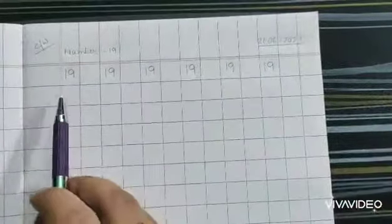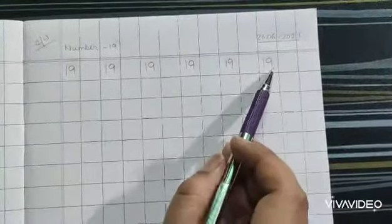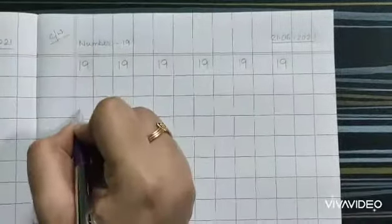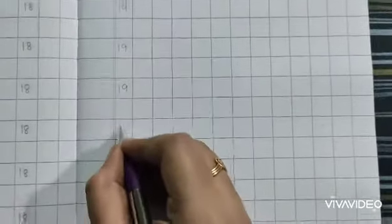So how many times? 1, 2, 3, 4, 5, 6. Six times. Now this way you can continue.